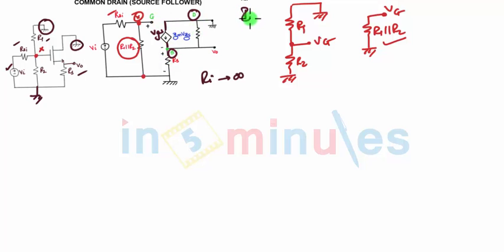The current is flowing from drain towards the source. Hence the direction of GMVGS is showing downwards. And you have the RS resistance connected at the source terminal. Between source and ground you have RS and the resistance small rO over here.